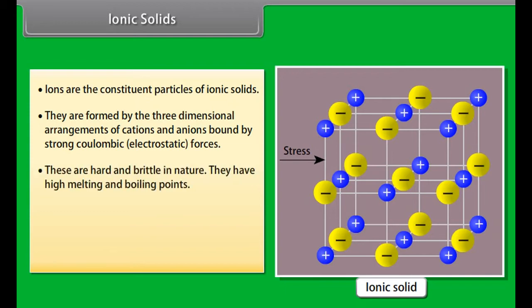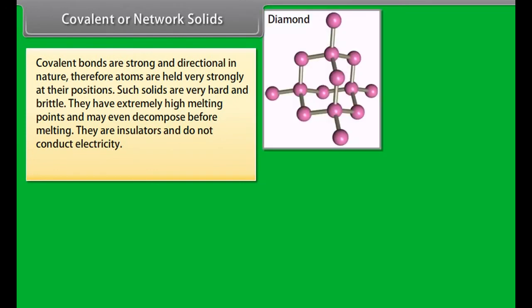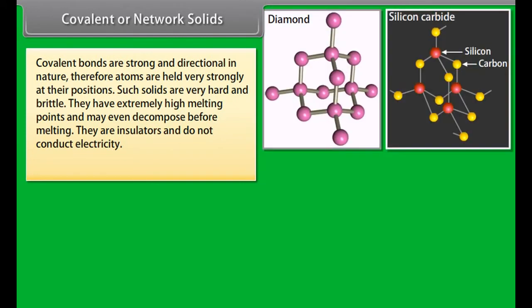Cl2 and I2 are also examples. Polar molecular solids have molecules formed by polar covalent bonds, held together by stronger dipole-dipole interactions. These solids are soft and non-conductors of electricity. Their melting points are higher than those of non-polar molecular solids.